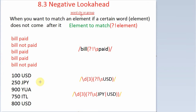In this second example, you want to match three-digit numbers if they are not followed by 'USD'. You don't want United States currency — all other currencies are acceptable. So you are going to leave US dollars and match all other currencies. The regex is: backslash d with quantifier three, then question mark, exclamation mark — negative lookahead — backslash s for space, and capital 'USD'.